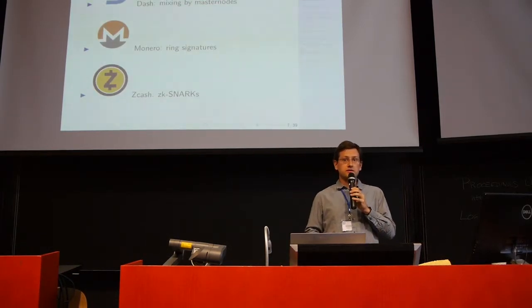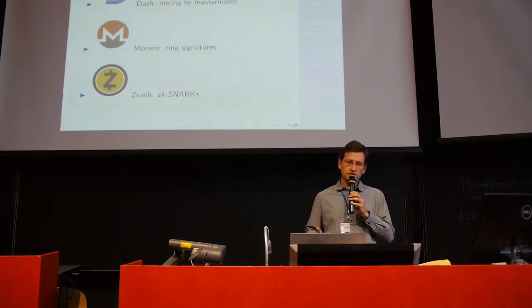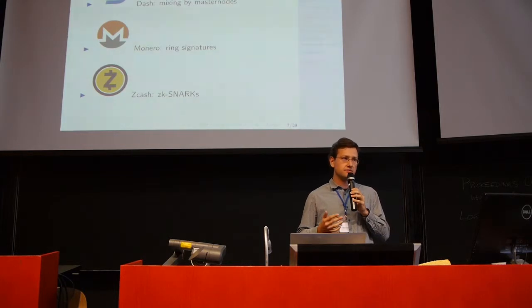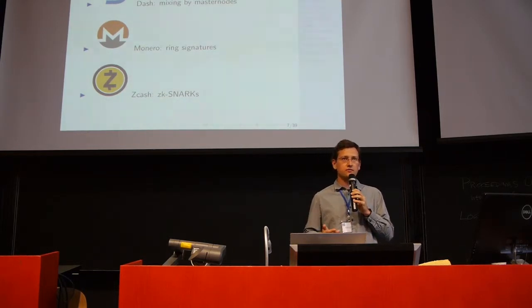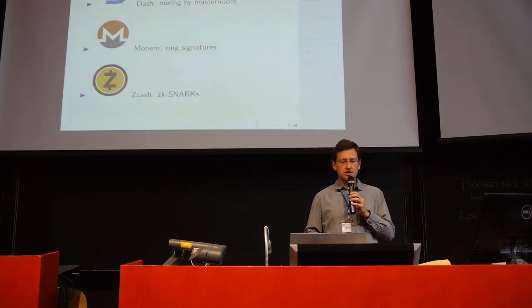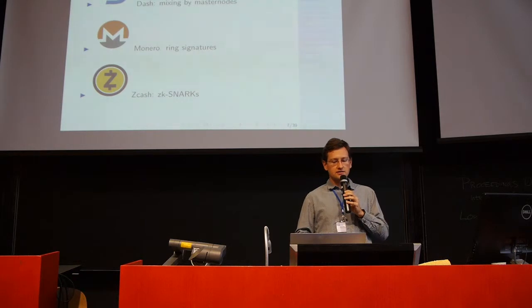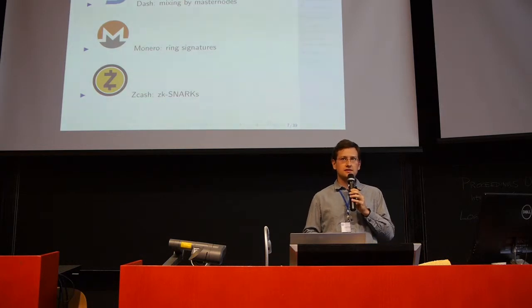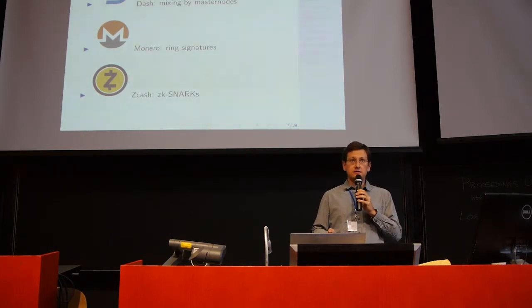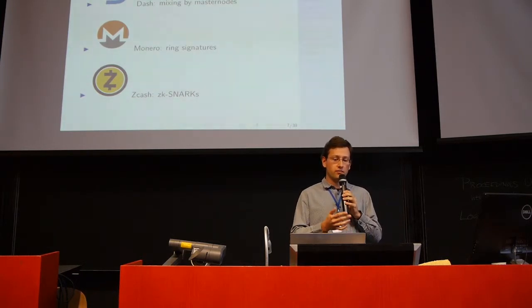Developers of cryptocurrencies are trying to counter this trend, and there are multiple alternative cryptocurrencies which emphasize privacy-preserving properties. The three major privacy-focused coins in alphabetical order here are Dash, Monero, and Zcash. Dash uses mixing by network of so-called masternodes. Monero uses ring signatures, and Zcash uses zero-knowledge proofs, and more precisely zk-SNARKs, to hide transaction details and still allow anyone to validate that everything is going according to the rules. And these techniques do, in fact, make blockchain analysis more difficult.